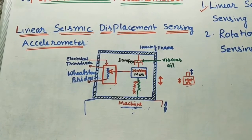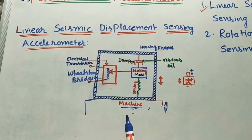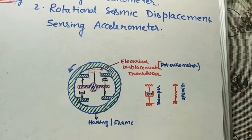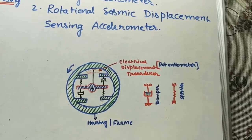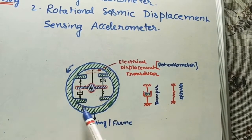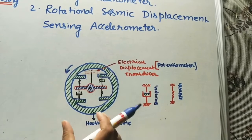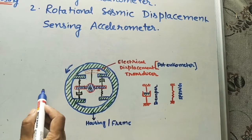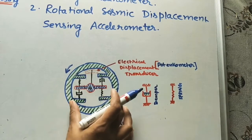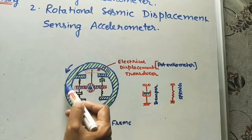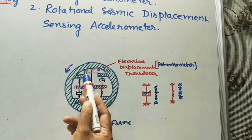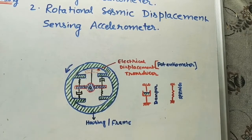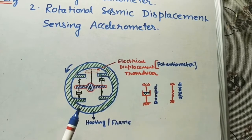The working process we have already discussed in the last class — I will give the link in the description box, please check it. The second type is rotational seismic displacement. This accelerometer is in circular form and we have to keep it on a rotational machine. If the machine is rotating, we keep the accelerometer on it, and with the machine it is also rotating.